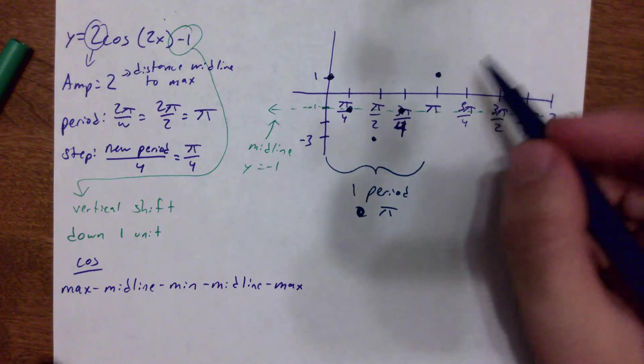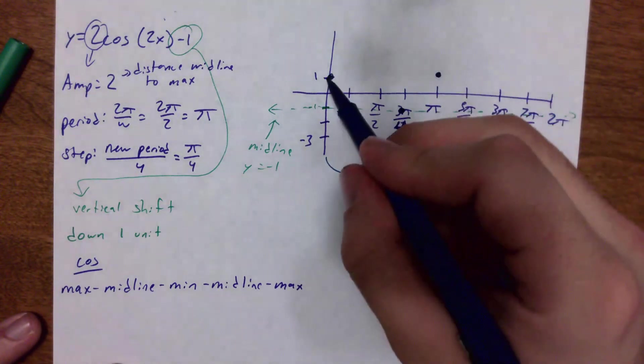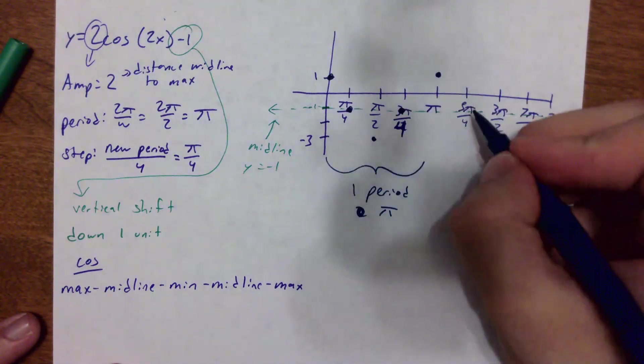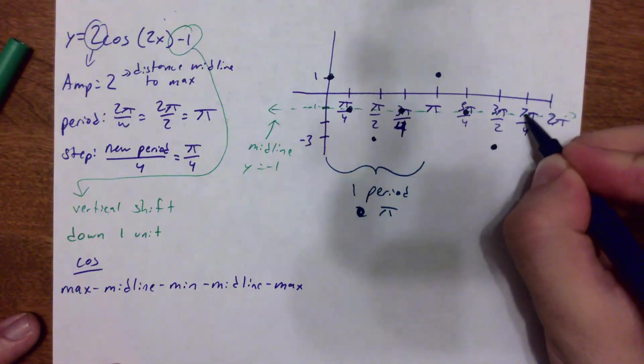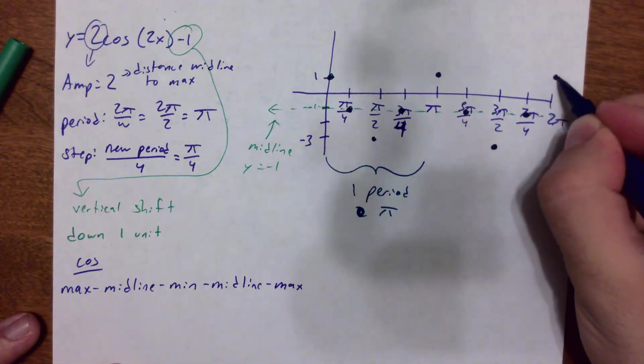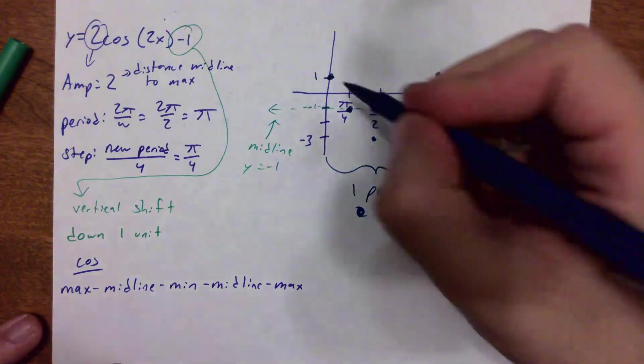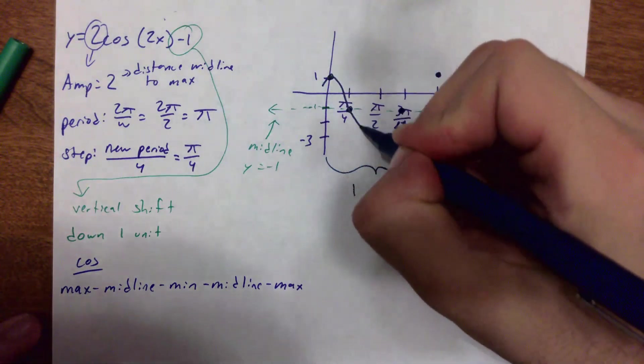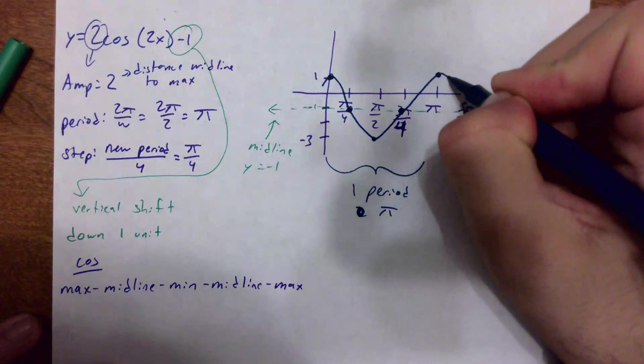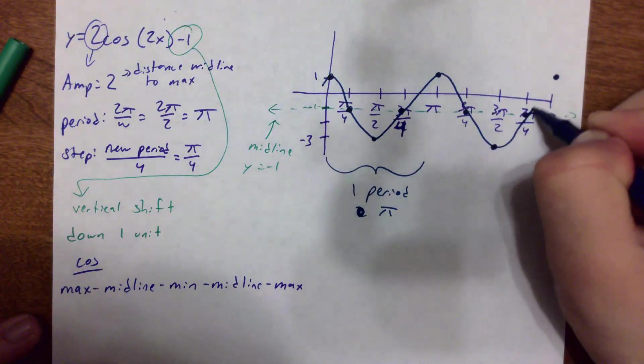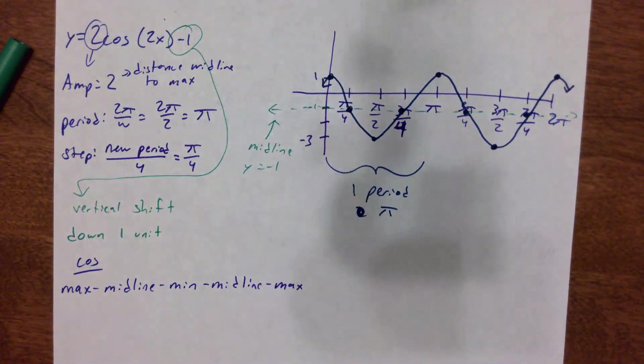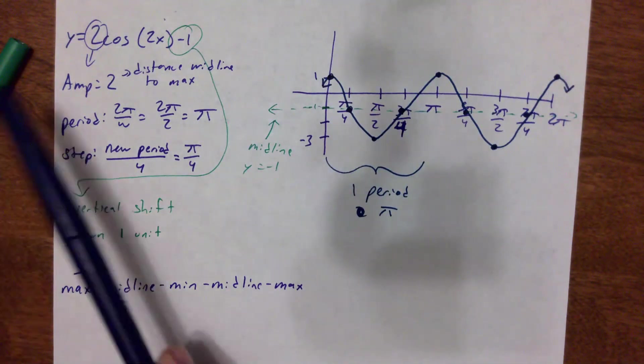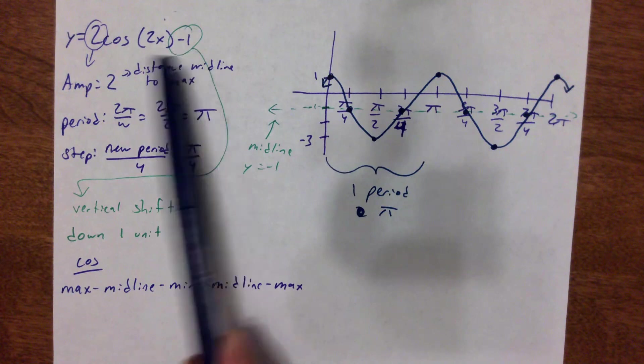And then repeat. So I already had my point at my maximum, like I did here. So I'm at my maximum, down to my midline, to my minimum, up to the midline, up to the max. And this is cosine here. And that is how you draw a cosine with an amplitude change, a period change, and a vertical shift.